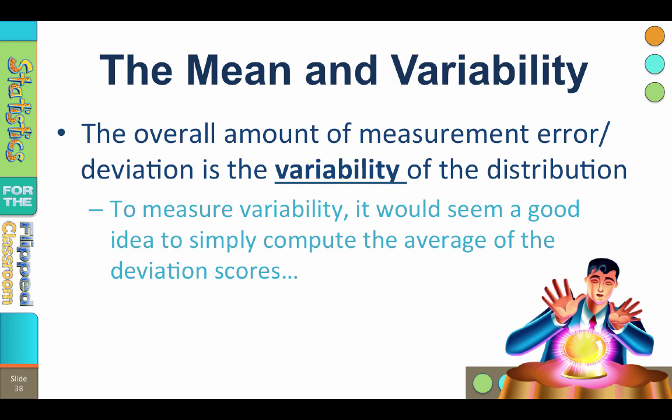When the scores are tightly packed together, there are small deviation scores. So the overall amount of measurement error or deviation is the variability of the distribution.